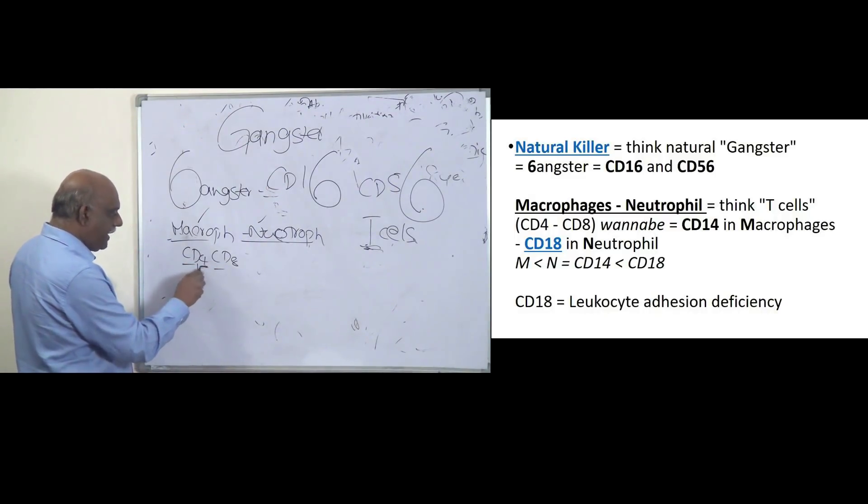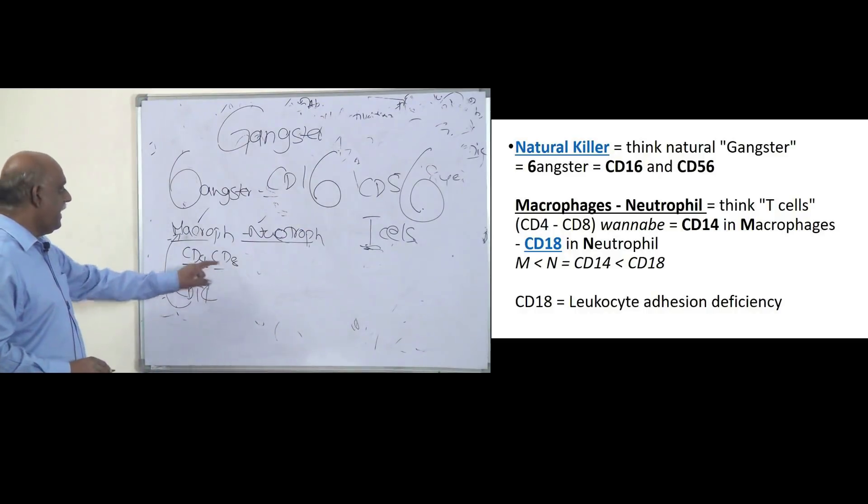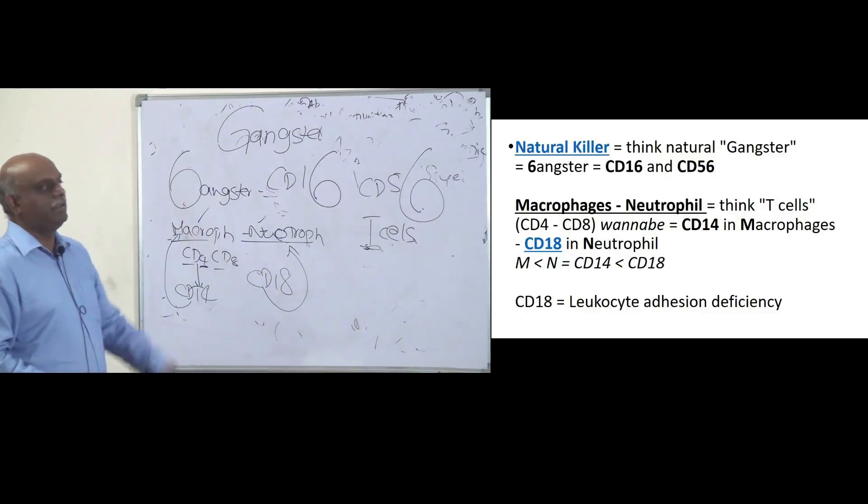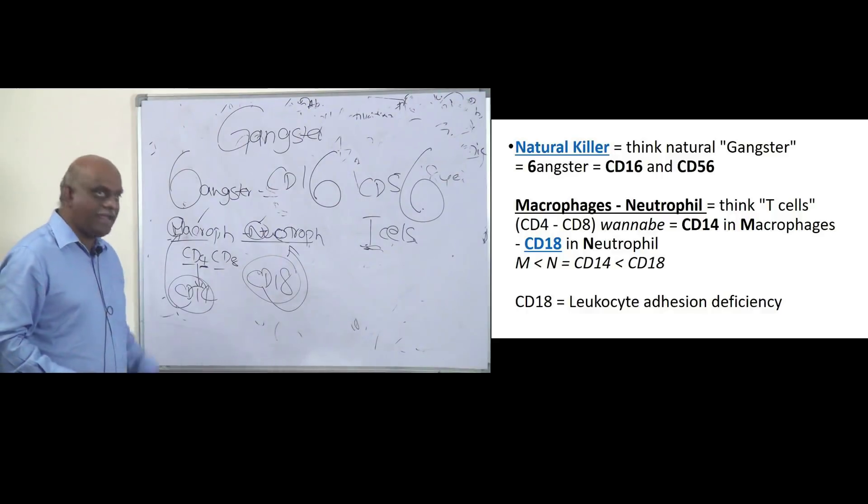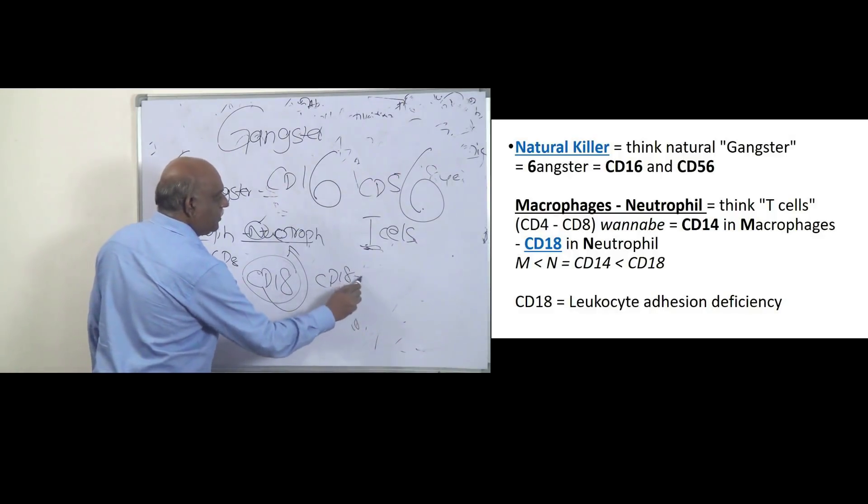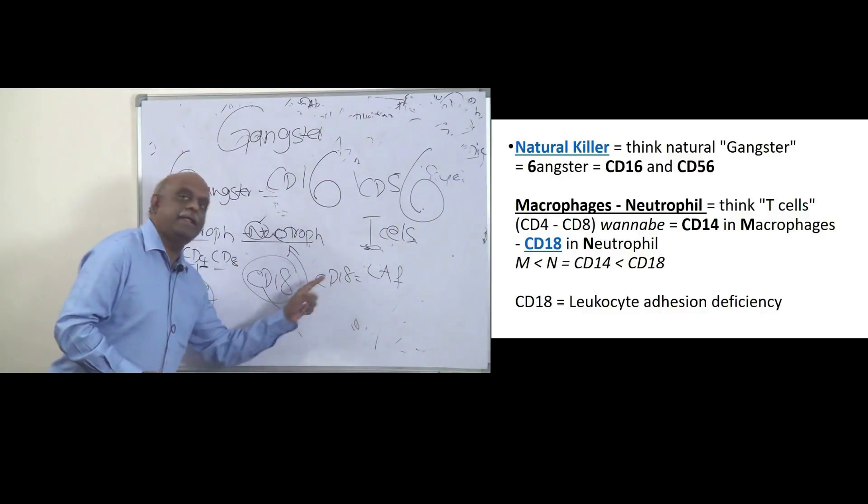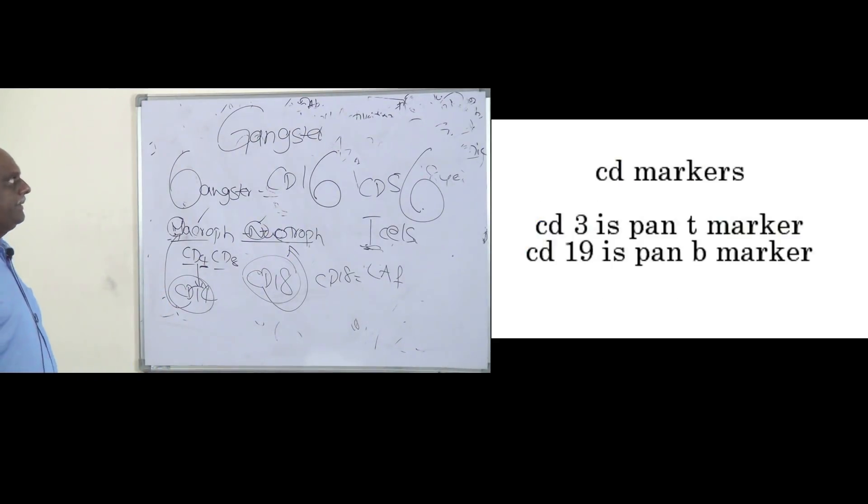Agar ye CD4 ke, 4 ke saamne 1 lagau, so CD14 ho gaya. CD14 is a macrophages. CD8 ke saamne 1 lagau, ka ho gaya? CD18 ho gaya. So CD18 means you remember neutrophils. And another thing, easy way to remember in exam hall is, 14 ke baad hi 18 aata hai. So that is the reason CD14 is less than CD18. So that is how you remember CD14 is macrophage, CD18 is neutrophil. And CD18 is also called leukocyte adhesion factor.